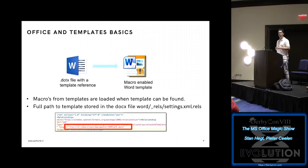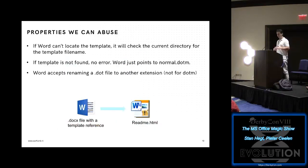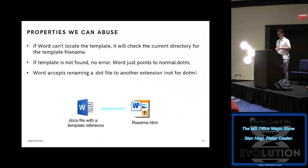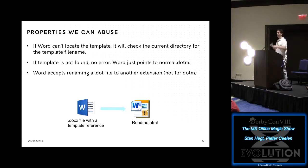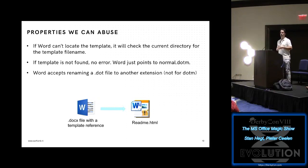There are some interesting properties of templates we can build upon. If Word can't locate the template, it will start looking for just the last part of the filename in the current directory. If the template is not found, there is no error — Word just renders the document with normal.dotm. This is intended behavior for laptop users on disconnected network shares. Interestingly, Word accepts a rename of a .dot file — the old-school template — to any extension, and Word just accepts that.